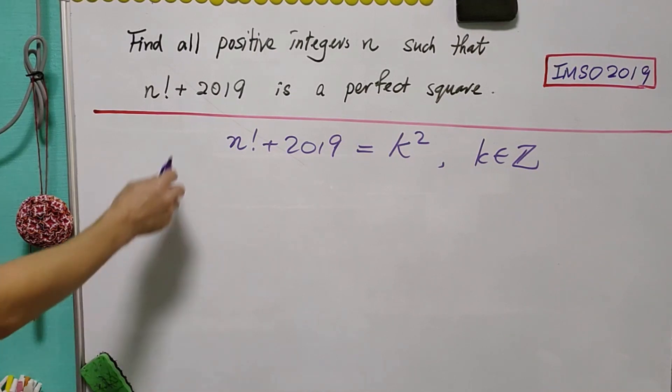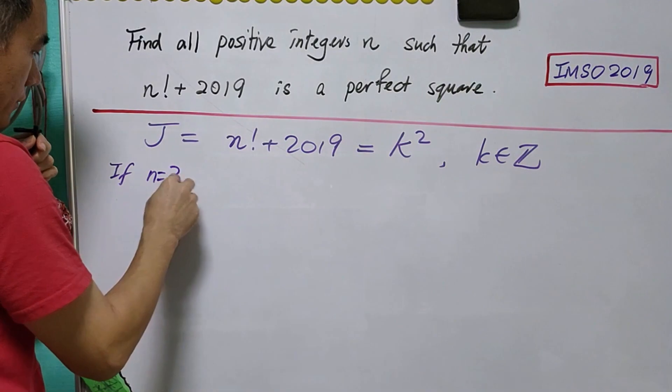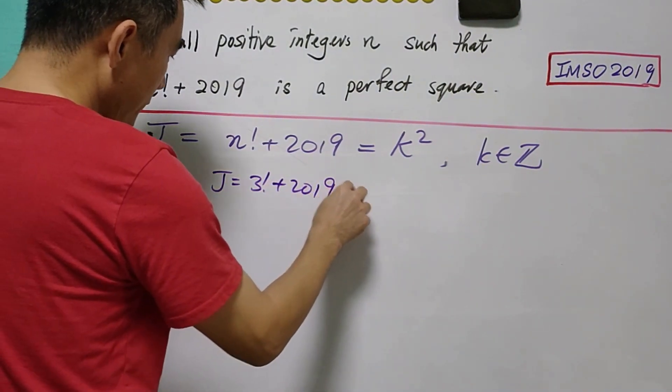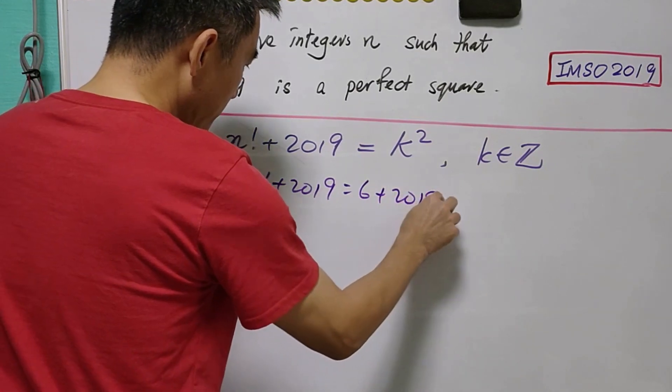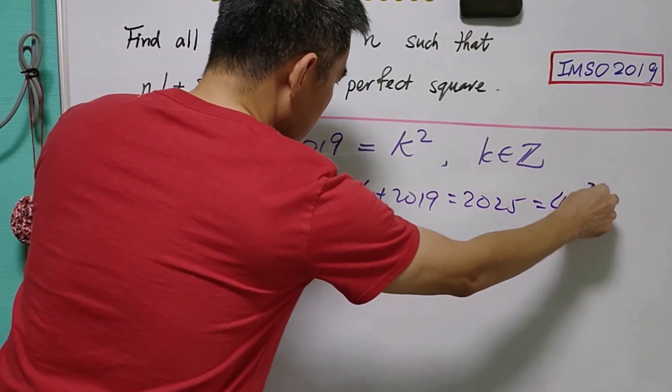Now, we let this number be j. If n = 3, then j = 3! + 2019 = 6 + 2019 = 2025 = 45².